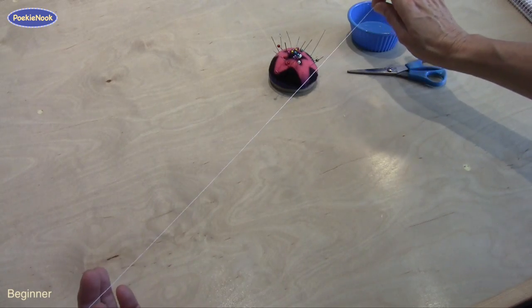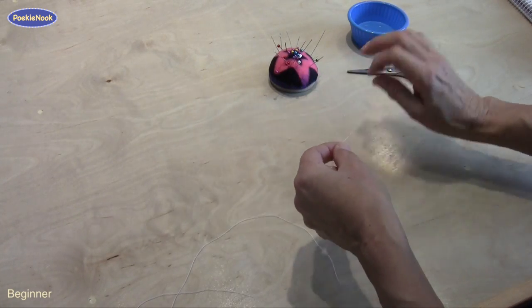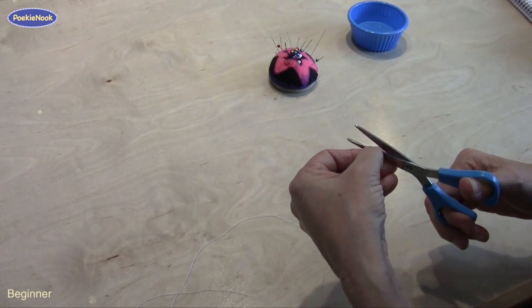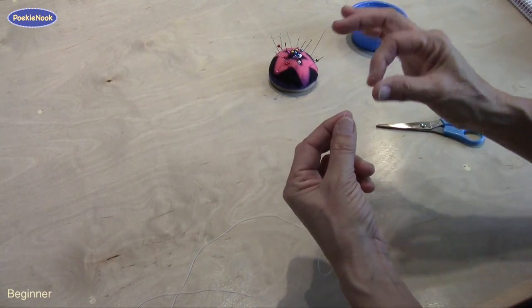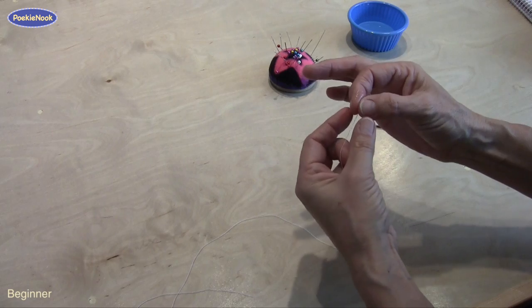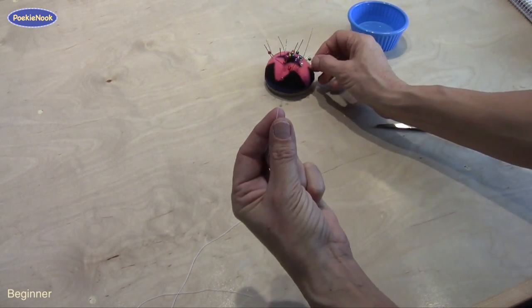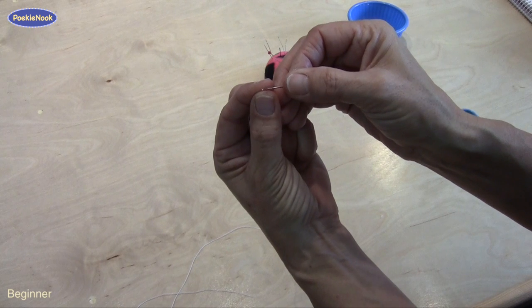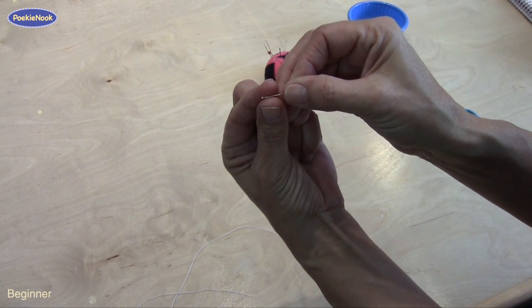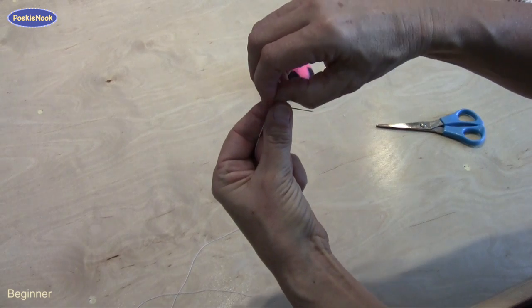First, cut the thread about arm's length. Then you snip the end to make sure you have a really sharp point. You wet your fingers a bit and slide them over it. Then you squeeze the thread in between your fingers and make the end quite small, and then you can push the hole of the needle over the thread.